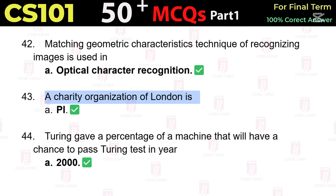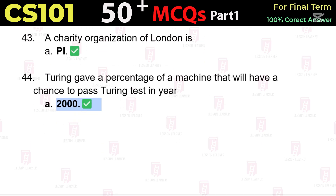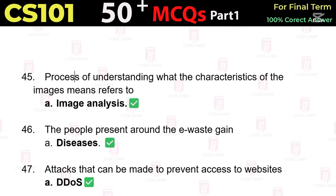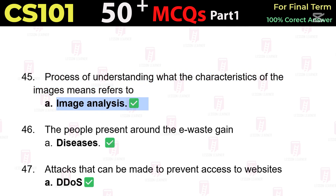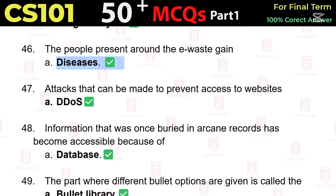The technique of matching geometric characteristics for recognizing images is used in optical character recognition (OCR). A charity organization of London is PI. Turing gave a prediction that a machine would have a chance to pass the Turing test by the year 2000. The process of understanding what the characteristics of images mean refers to image analysis. The people present around e-waste can gain diseases.